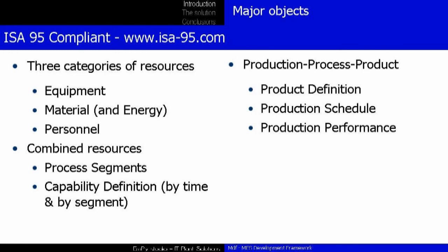The ISA-95 standard consists of several models — for example, models of the physical structure of the enterprise, models of production procedures, models of information flows, and object models. A model is a useful representation of a specific attribute or behavior. Models are useful because they describe or mimic reality without dealing with every detail of it. They typically help people analyze the situation by combining ideas with information about that specific situation.